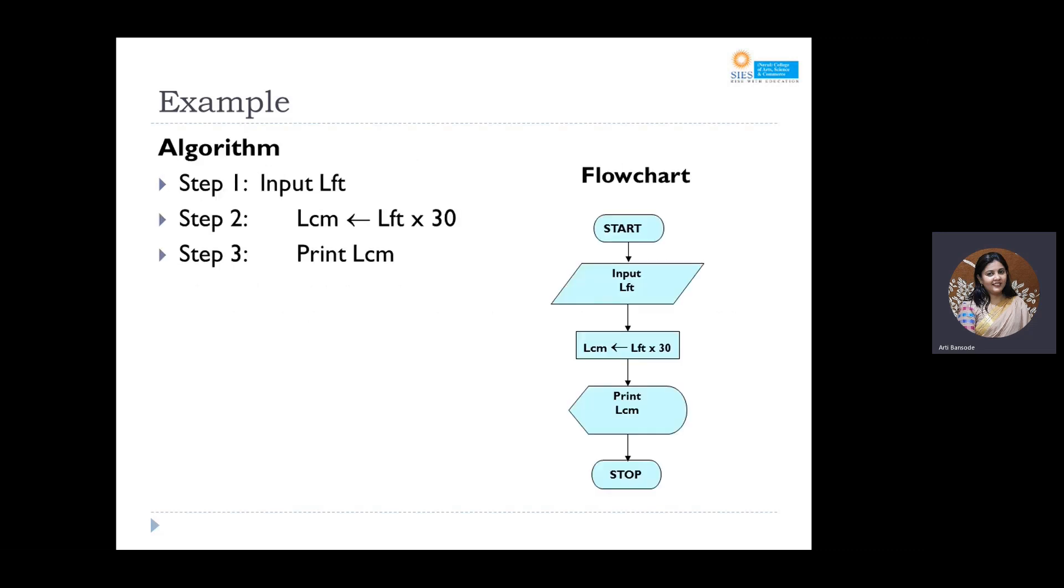The algorithm is again very simple. Step number one: input the feet. Step number two: calculate or convert the feet to centimeter using the formula, feet into 30—feet multiplied by 30. And finally, step number three is print the length in centimeter. So if you look at the flowchart, again it is quite easy to understand. You have the start state, then you take the input which is put in a parallelogram, then you calculate.